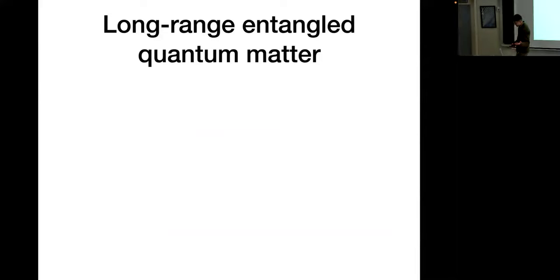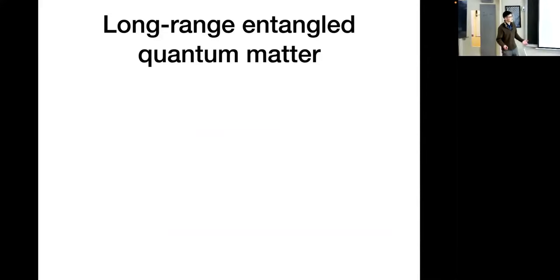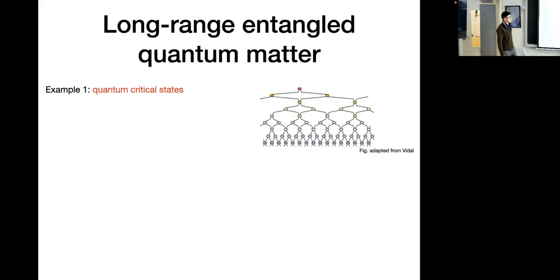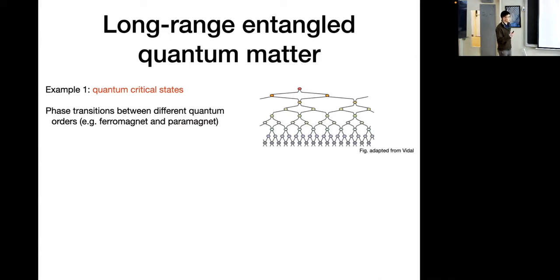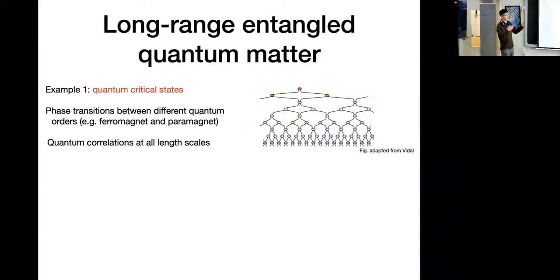Let's begin with something very dear to the hearts of condensed matter and quantum matter theorists: long-range entangled matter. This is quantum matter that's very far from our everyday classical reality of product-like states, and hence one of the most interesting phases of matter. One prime example of long-range entangled states are quantum critical states — states that can occur at phase transitions between different phases of matter, such as between paramagnets. These are long-range entangled and have quantum correlations at all length scales.